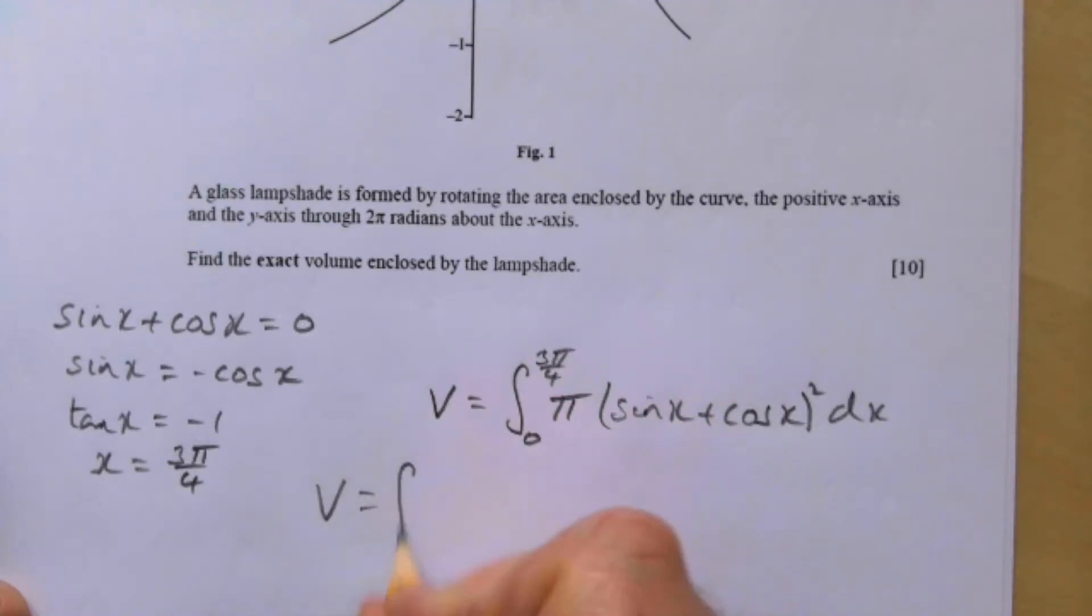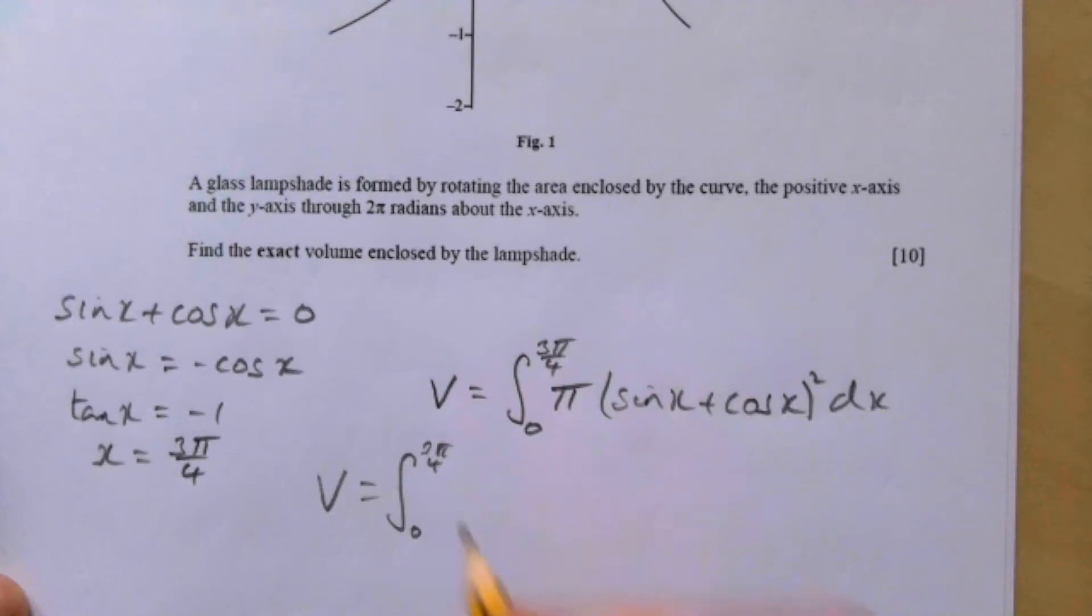Hopefully you see what's going to happen—sine squared plus cos squared is just one. That gives us the integral between three pi over four and zero of π times sine squared x plus two sine x cos x.